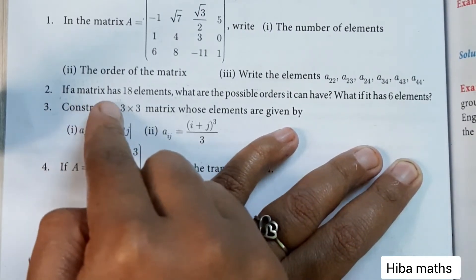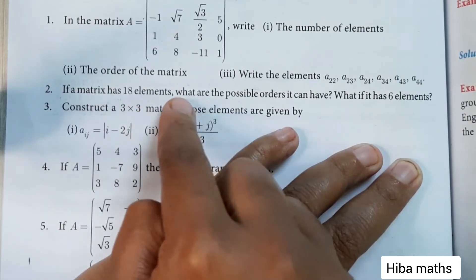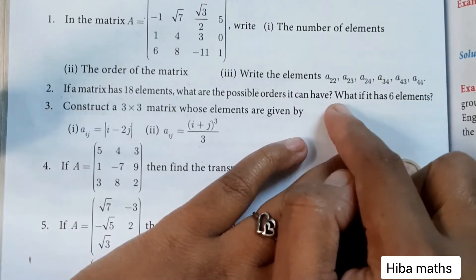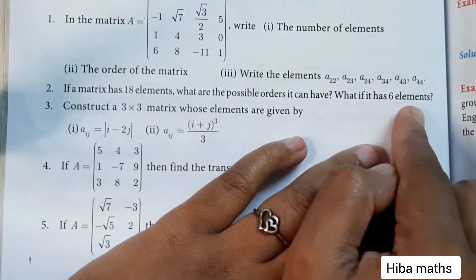Second question: If a matrix has 18 elements, what are the possible orders it can have? What if it has 6 elements?